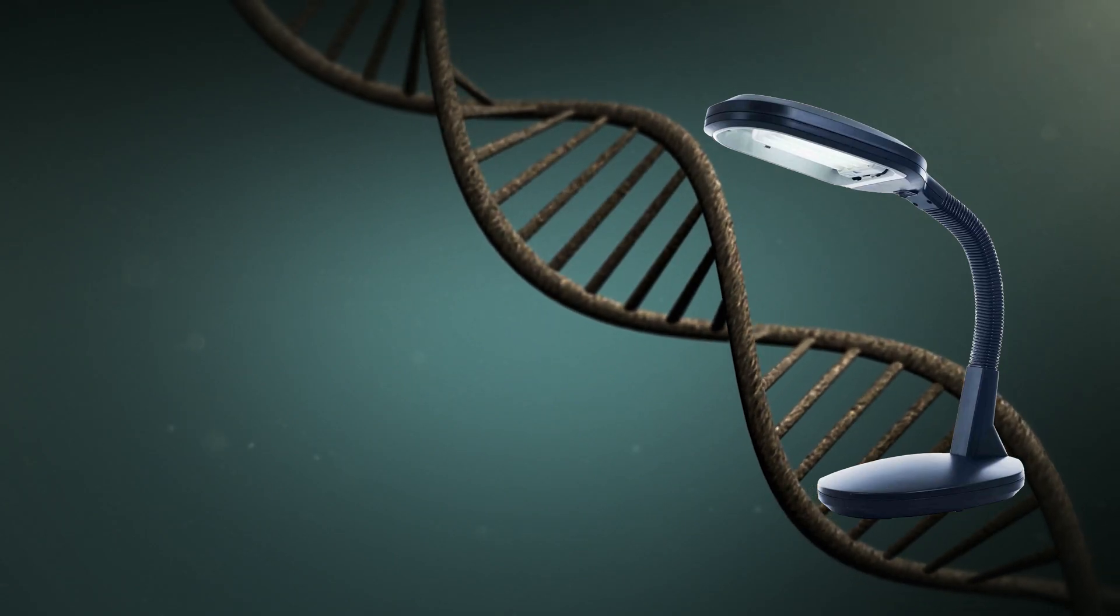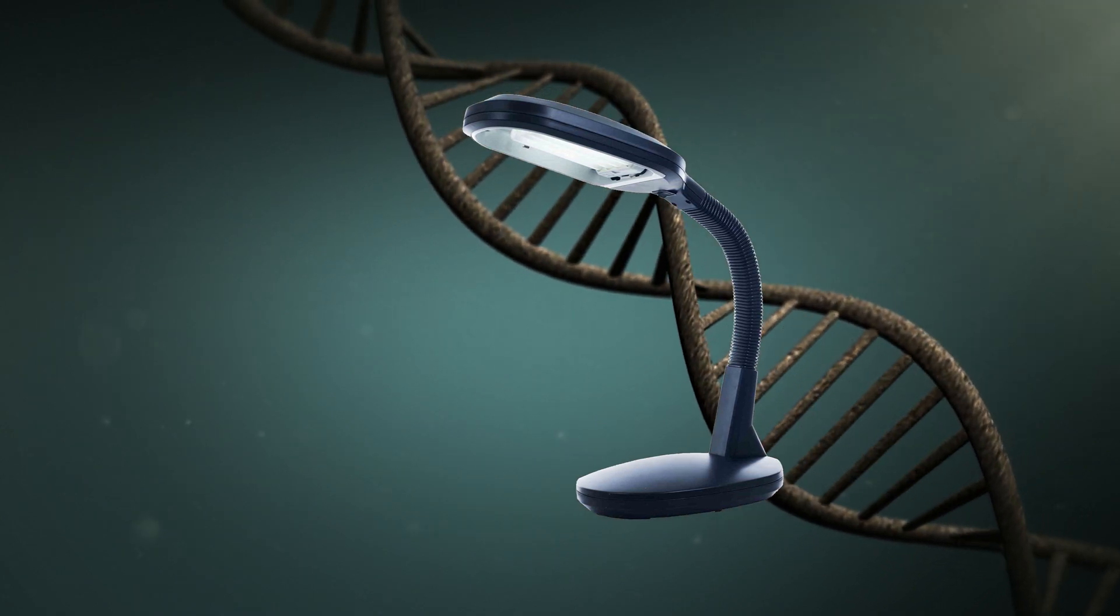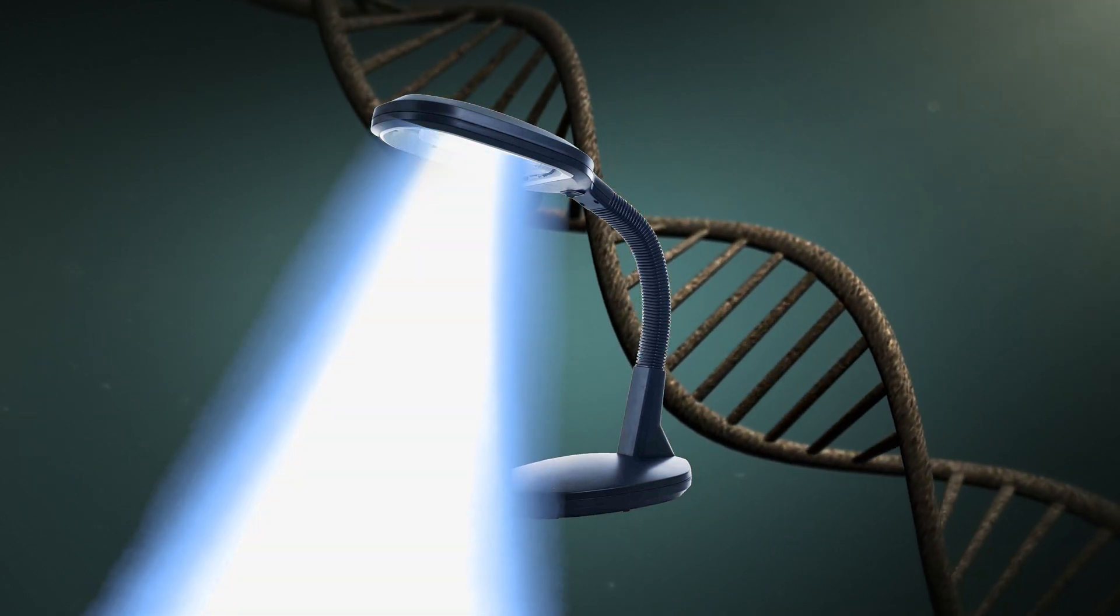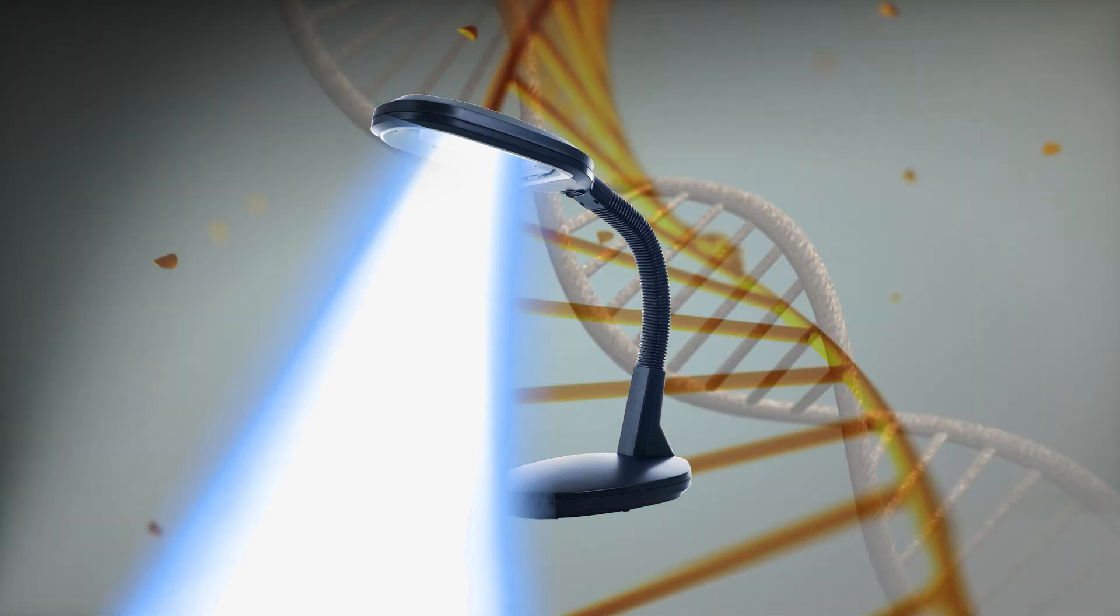The UVC spectrum targets the microbe's genetic structure. At high UV doses, the light beam stops the reproductive capabilities of the microorganism.